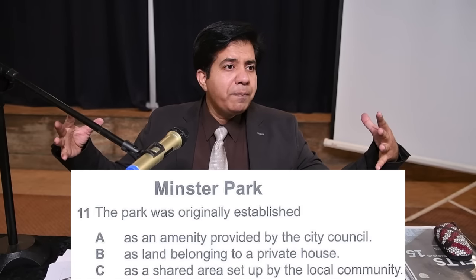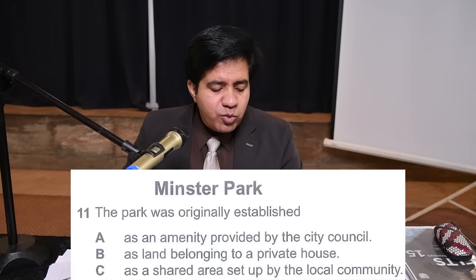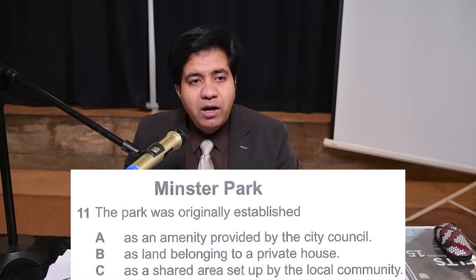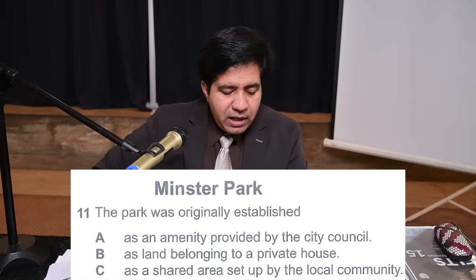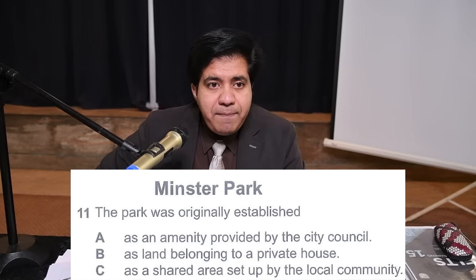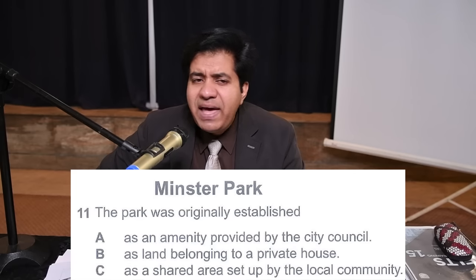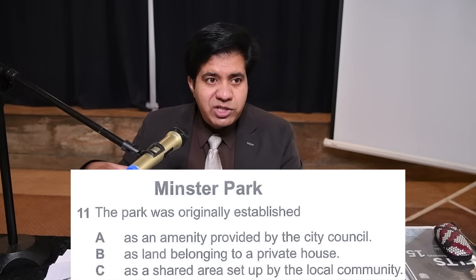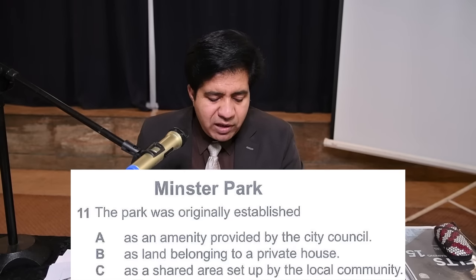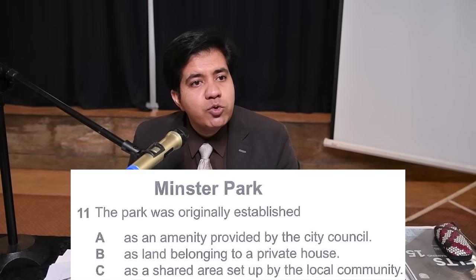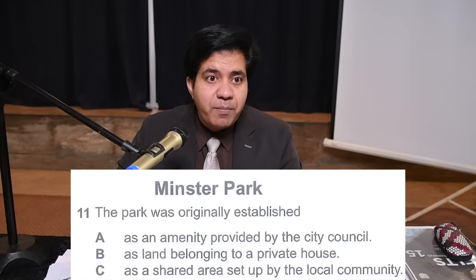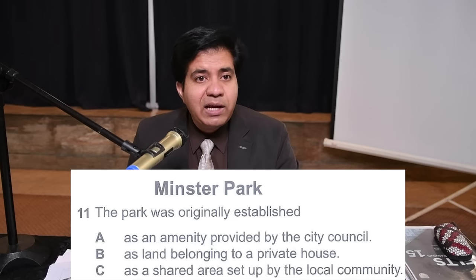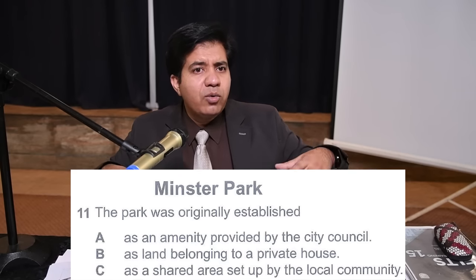If the option is long, just focus on nouns, verbs, and adjectives. Question number 11: Minster Park. Imagine a park — the name is Minster Park. Question: the park was originally established. Option A: amenity provided by the city council — 'amenity' means a sort of facility. Option B: land belonging to a private house. Option C: shared area set up by the local community.